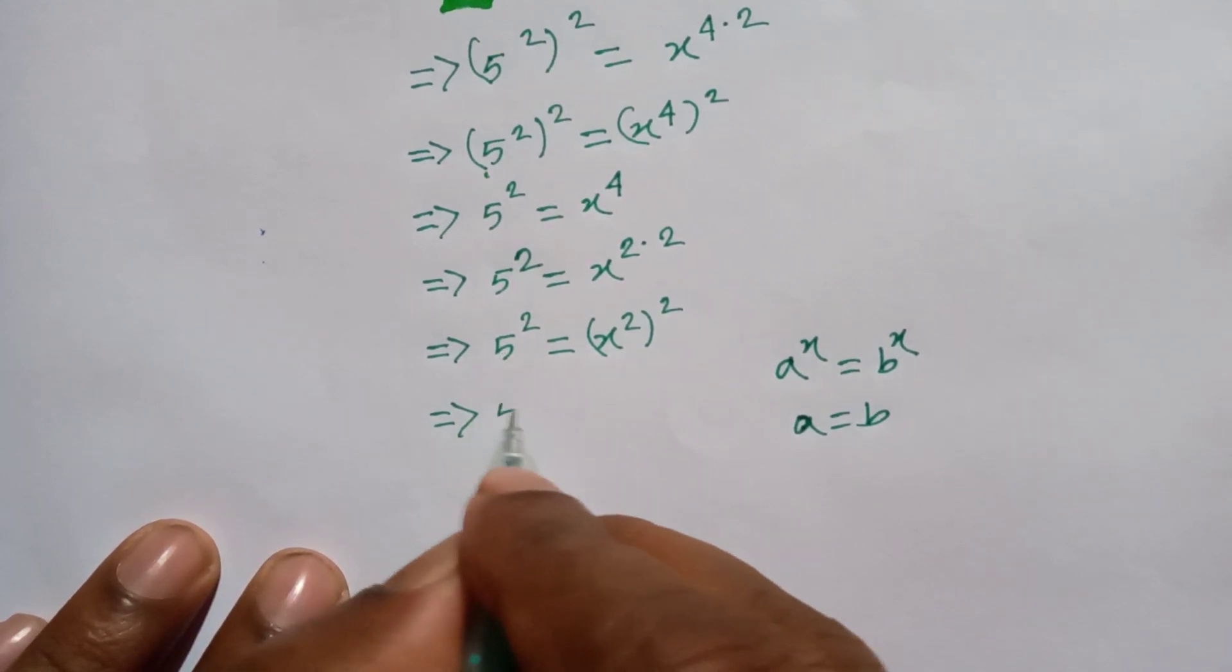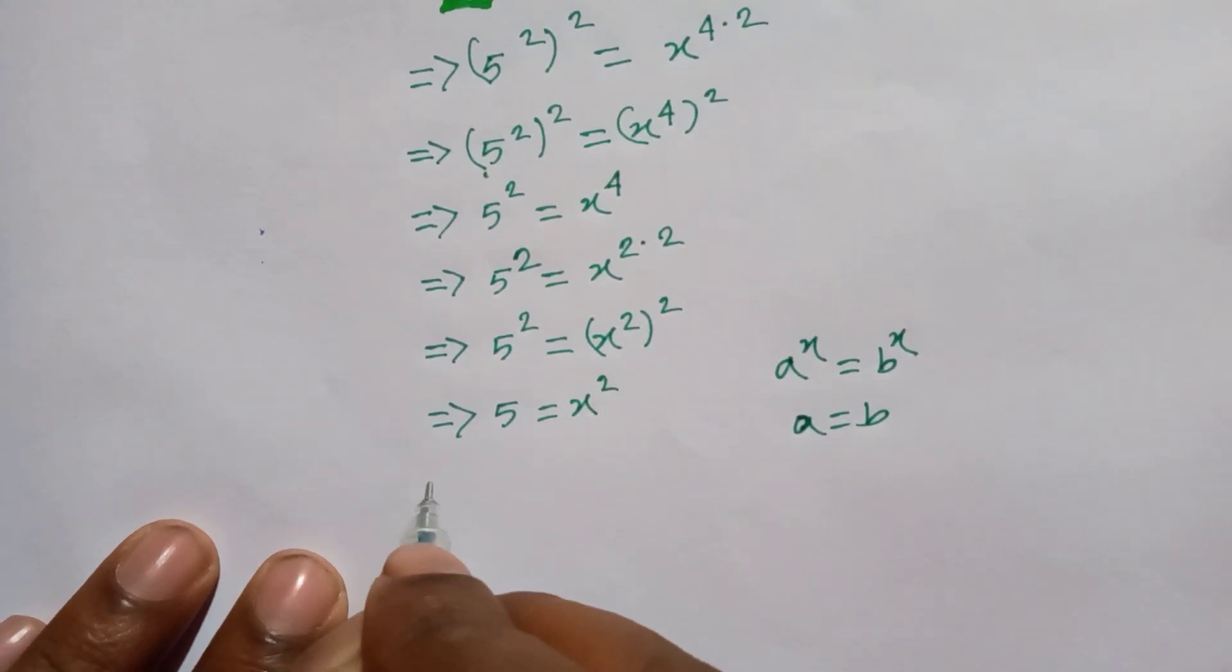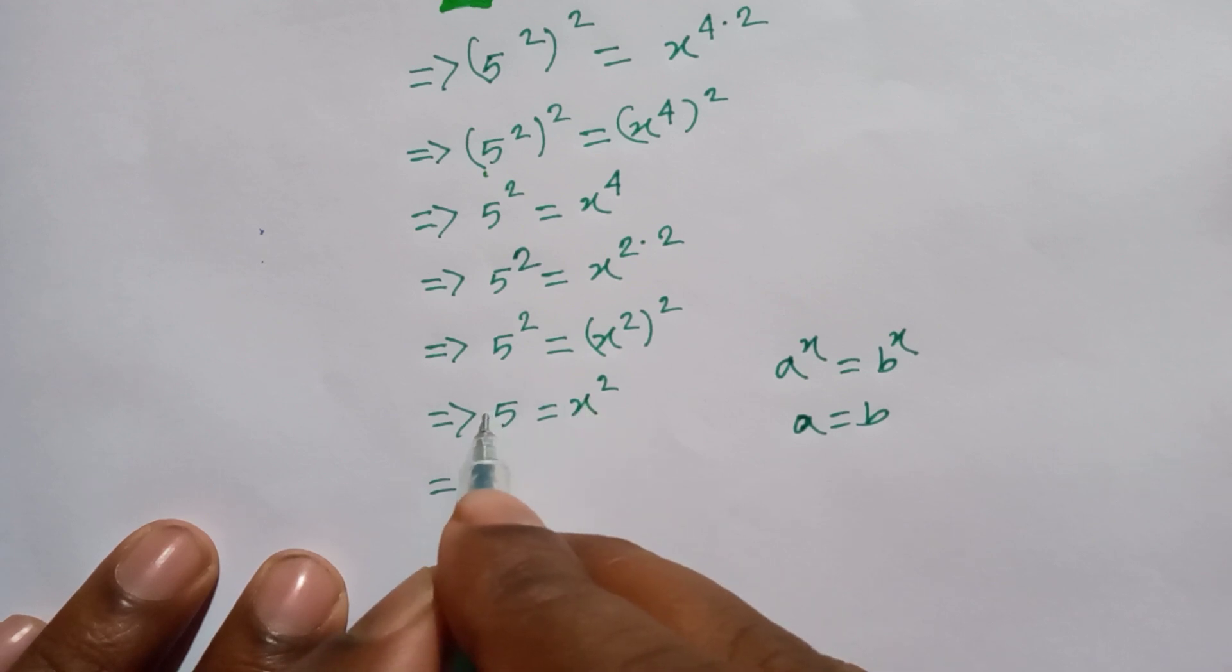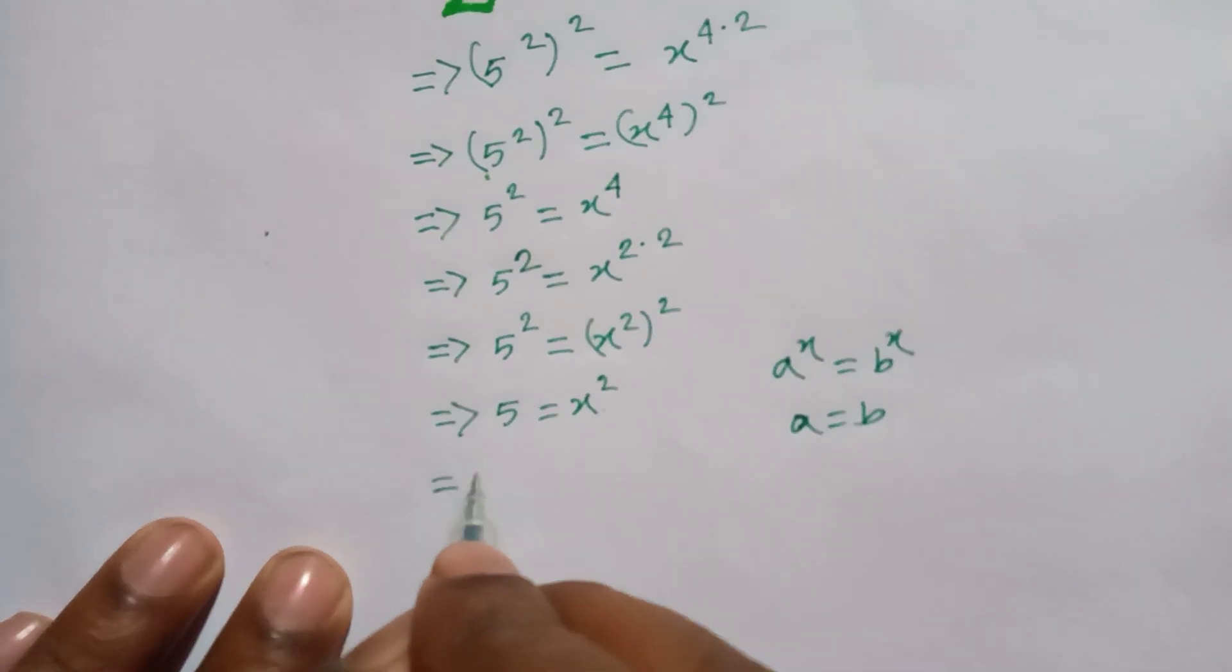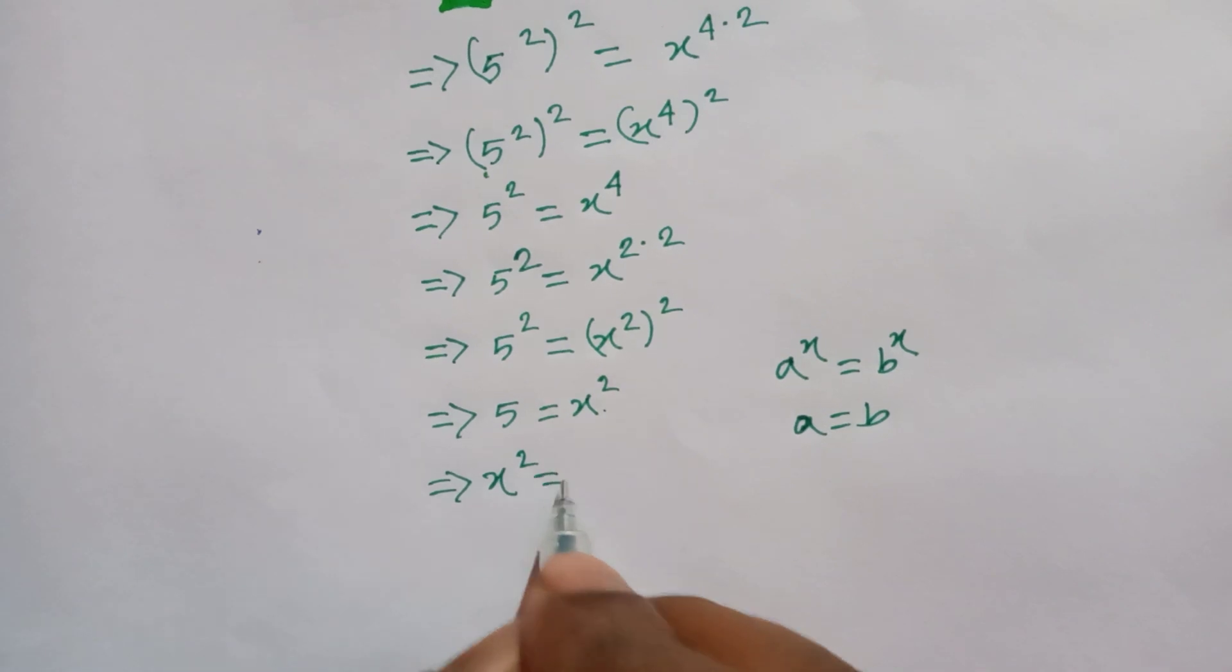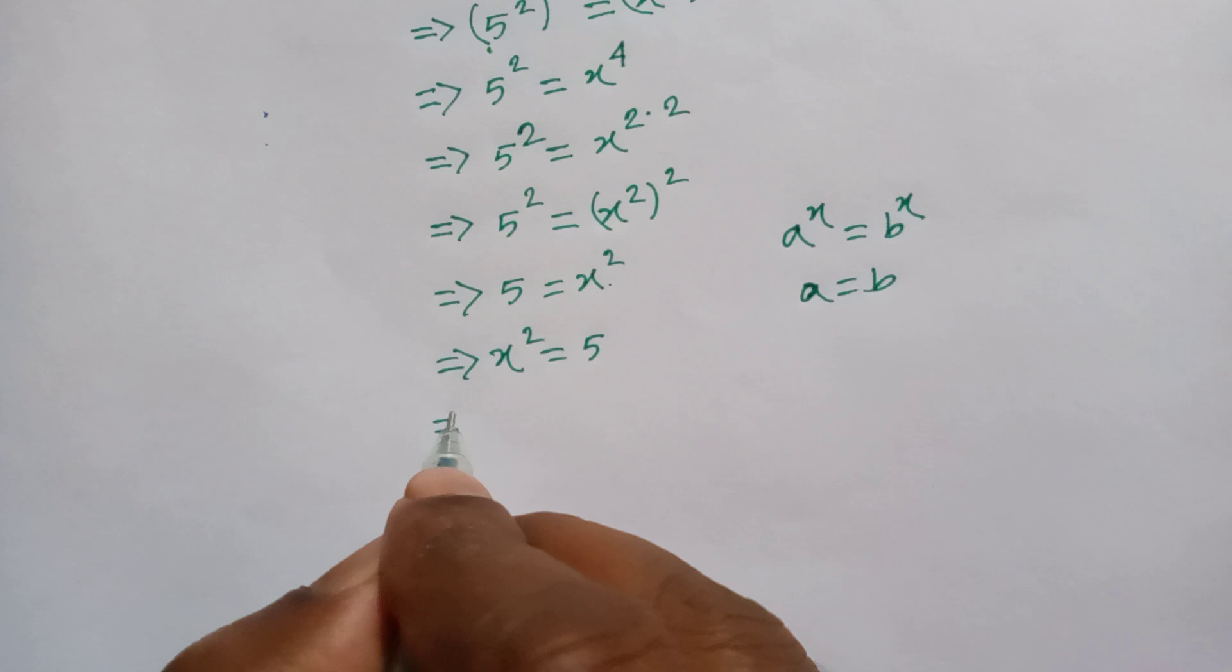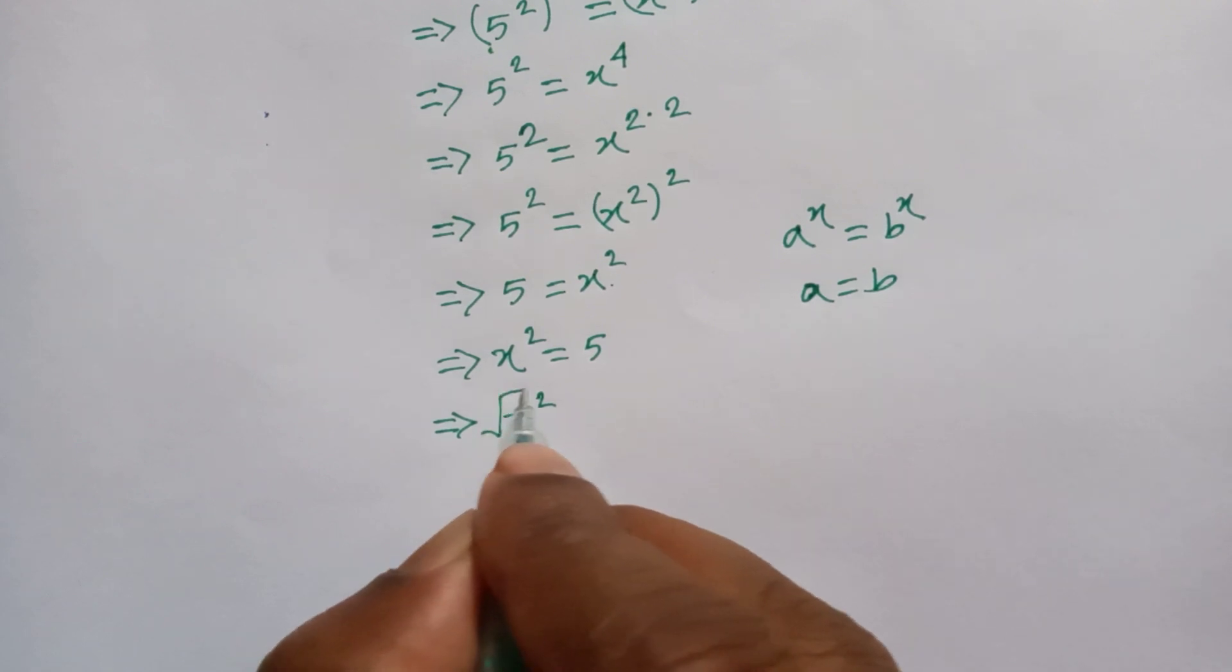Or now we will take this side here and this side here, so x square is equal to 5. Now we take both sides square root, so x square root is equal to root 5.